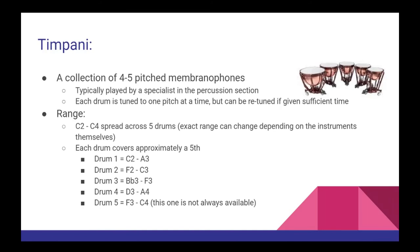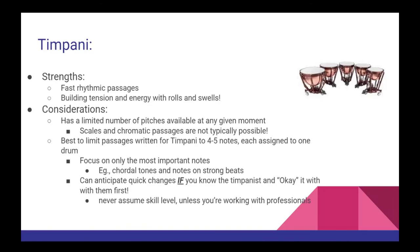The next drum is Bb2 to F3, and the fourth is D3 to A3. The fifth drum is a bit rarer than the other four, but it has an approximate range of F3 to C4. The timpani is best used for fast, rhythmic passages and for building up to climactic moments with rolls or swells. However, due to the limited number of pitches available at any given time, scales and chromatic passages are not typically possible. When writing parts for your timpanist, it is best to limit each musical segment to just four or five notes, selecting only the most important pitches you want the timpani to accent.